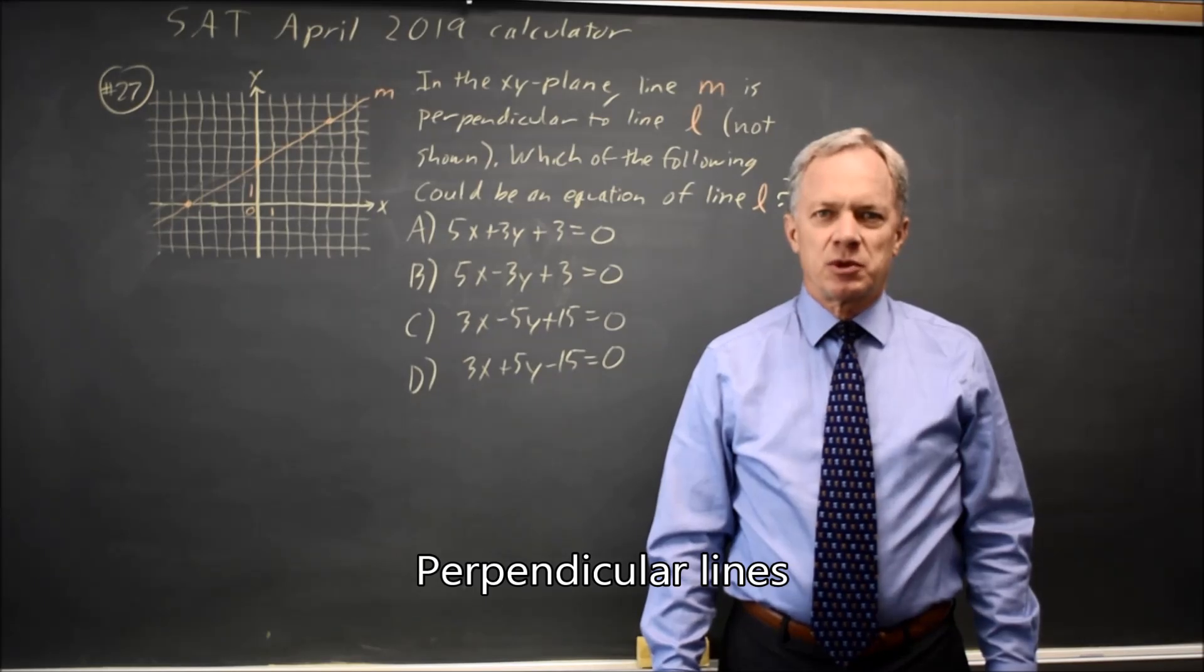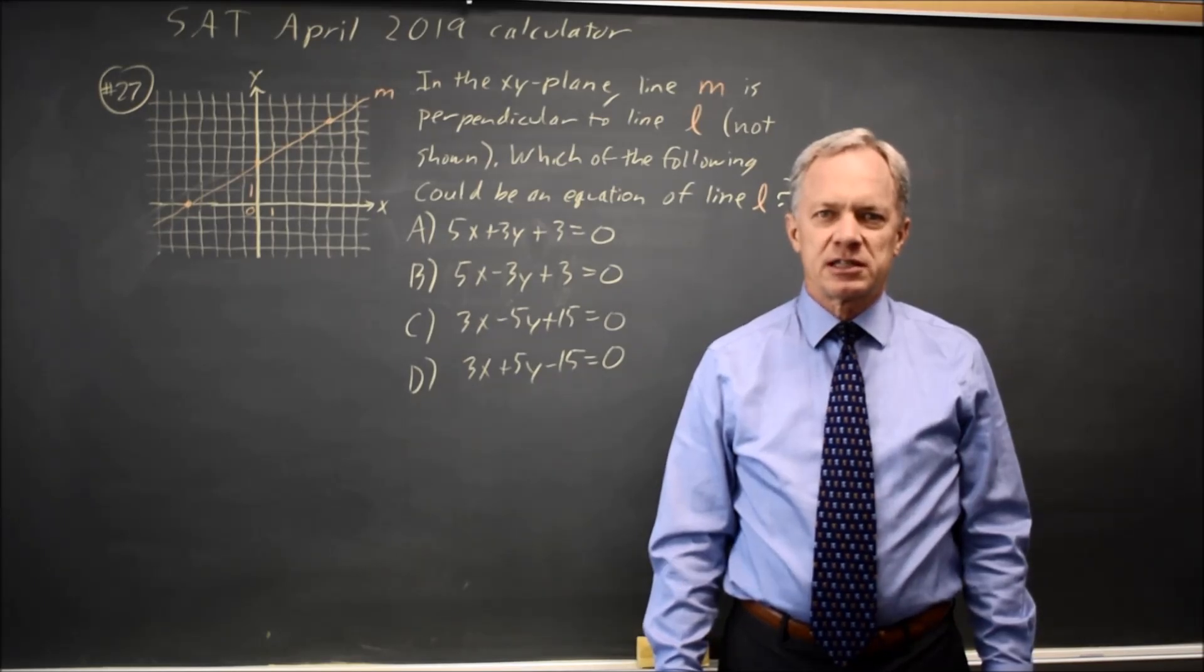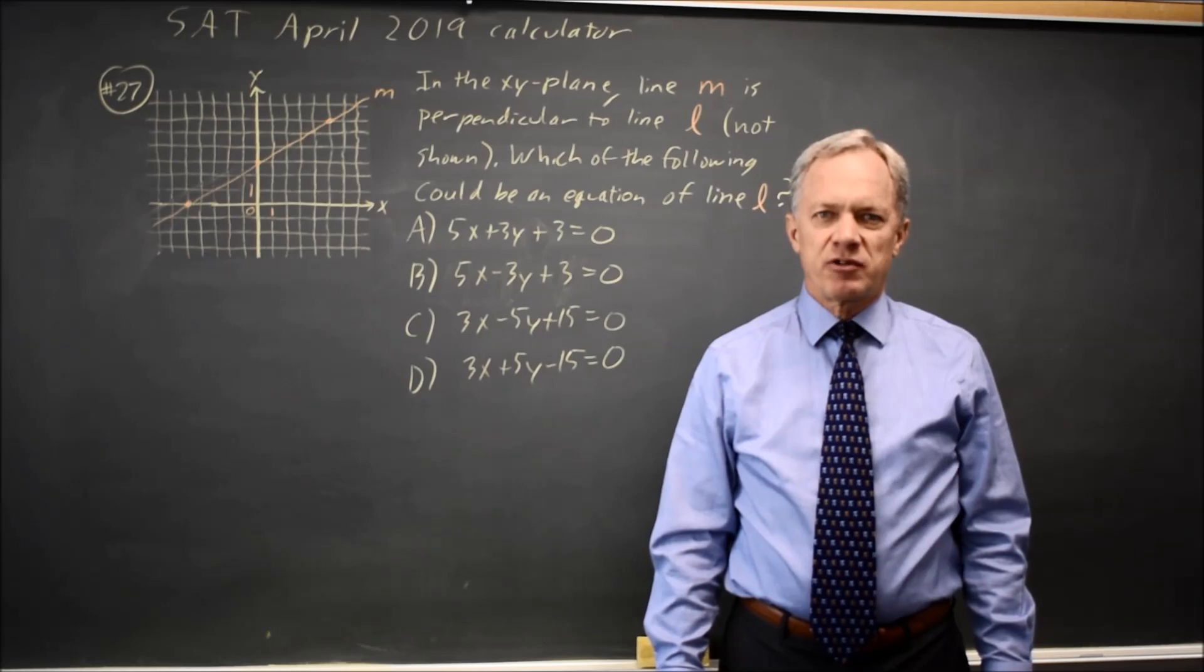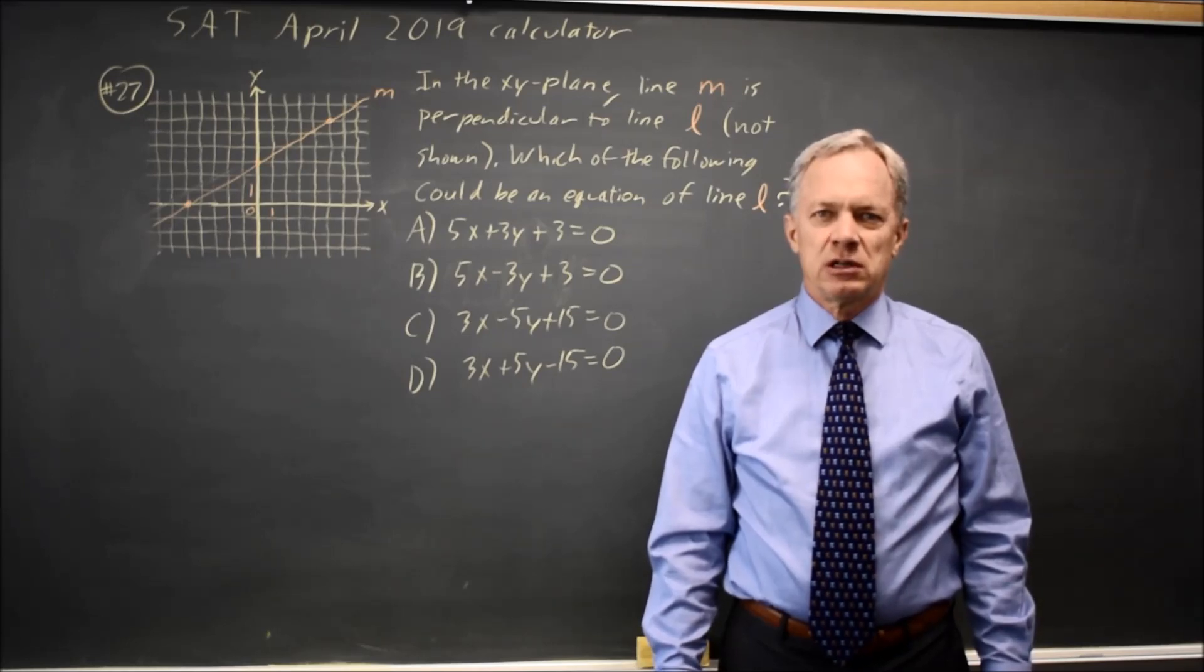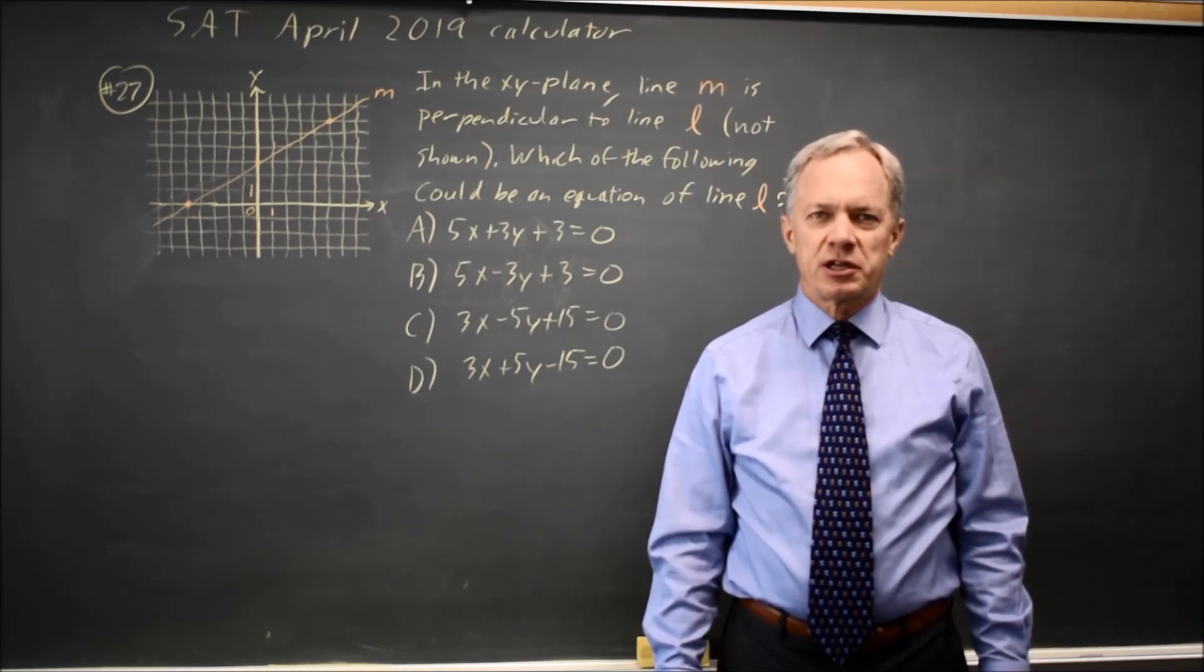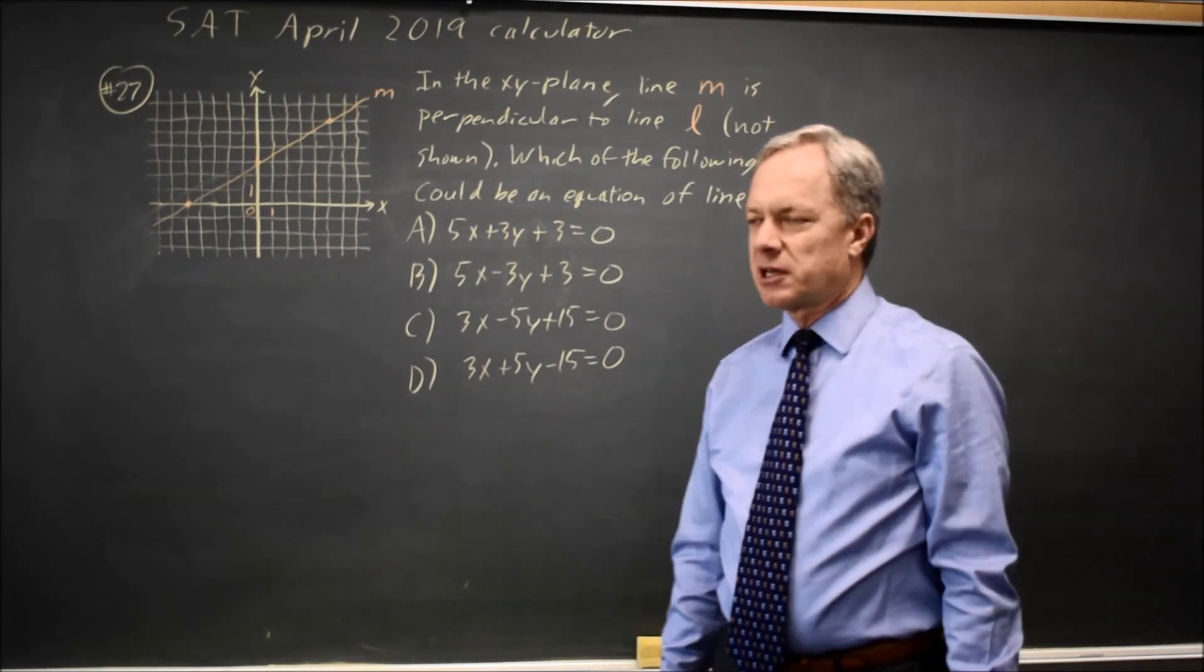This is calculator question number 27 from the April 2019 SAT. College Board gives us the graph of a line and they ask for the equation of a perpendicular line, which of the following could be that equation.